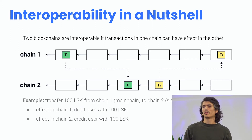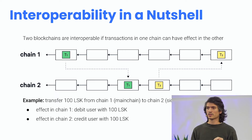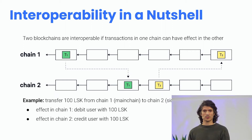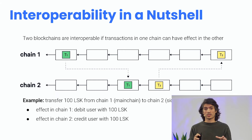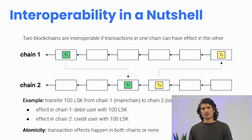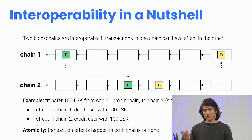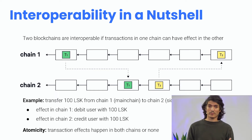Let's look at a concrete example and take a transfer of 100 LISC tokens from the main chain to a sidechain. The effect on chain one, the main chain, would be to debit the user with 100 LISC, and the effect on chain two, the sidechain, would be to credit the user with 100 LISC. A very important property we want for these cross-chain transactions is atomicity — meaning the transaction effects have to happen on both chains or on none. In this case, if something goes wrong on the sidechain, we do not want to debit the user on the main chain without crediting them on the sidechain, resulting in nothing happening at all.